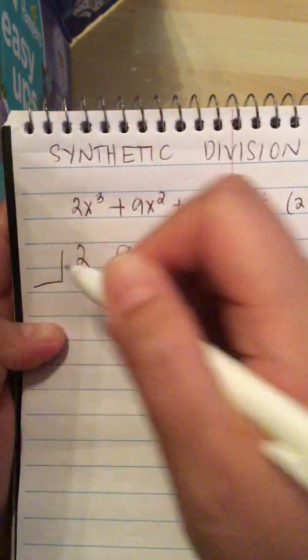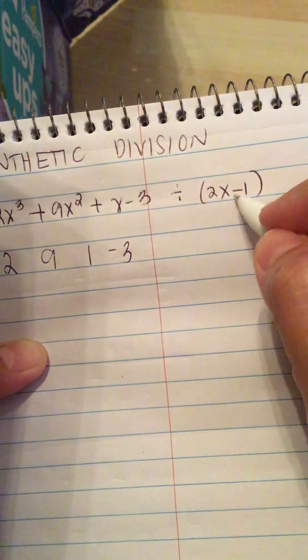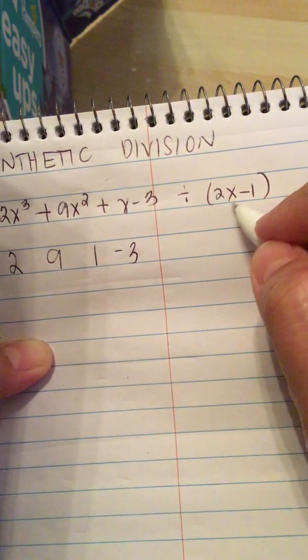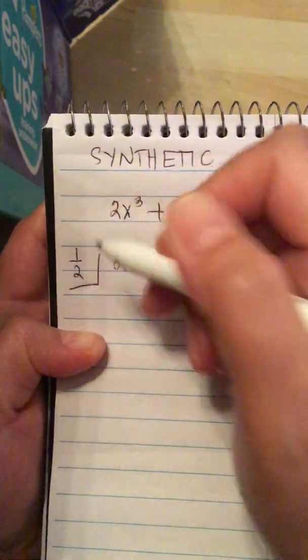And in here, we write down the root, or this is the divisor. So 2x minus 1, or this is 1 half. So we write it down here.